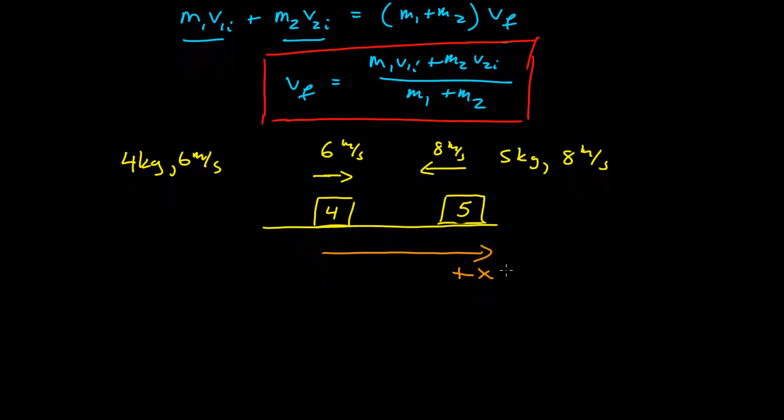And the coordinate system is going to give me information about the direction of these velocity vectors. If I choose positive x to go to the right, then that means this is a positive six meters per second and this is a negative eight meters per second. So you can see how important it is to identify your coordinate system so you can determine the sign of your vector quantities.